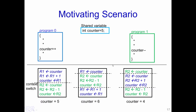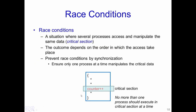This was an example of the issues that occur with shared memory. Even with the simple operations of incrementing a counter in one process and decrementing it in another, the result could differ depending on how the instructions execute and when context switches occur. We define this scenario more formally as a race condition — a situation where several processes access and manipulate the same data. The part of the process which accesses shared data is known as a critical section. The outcome depends on the order in which accesses take place.